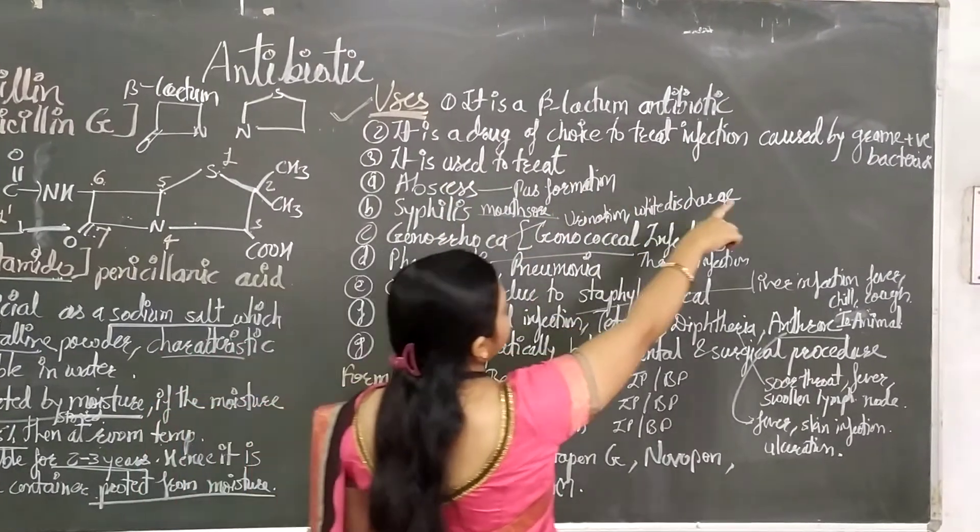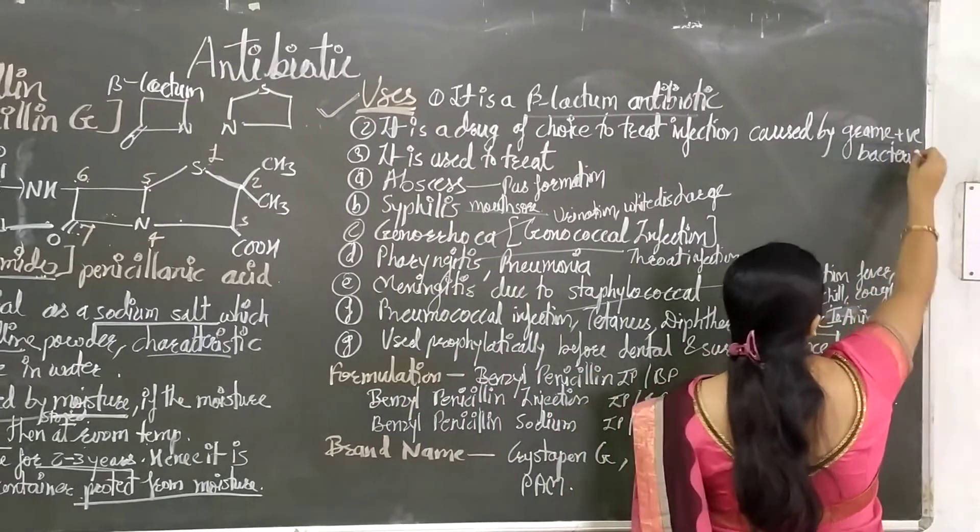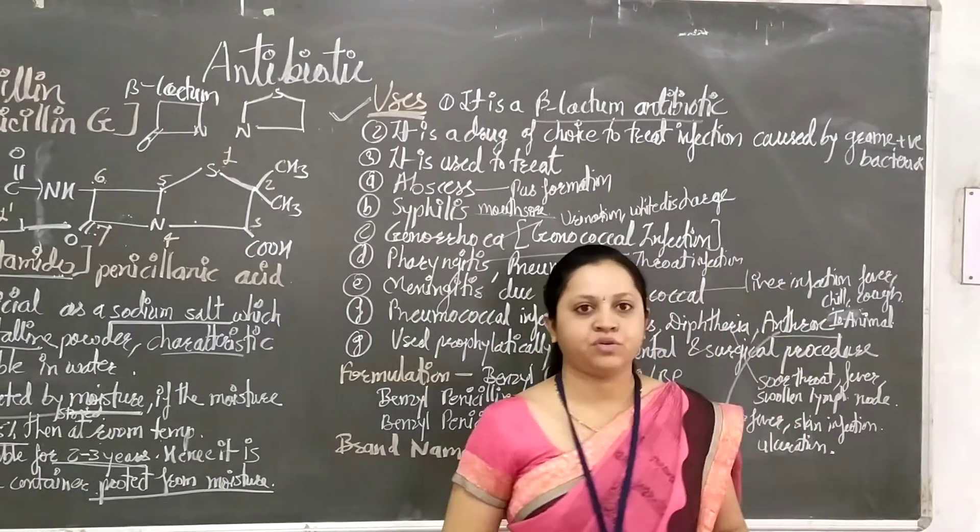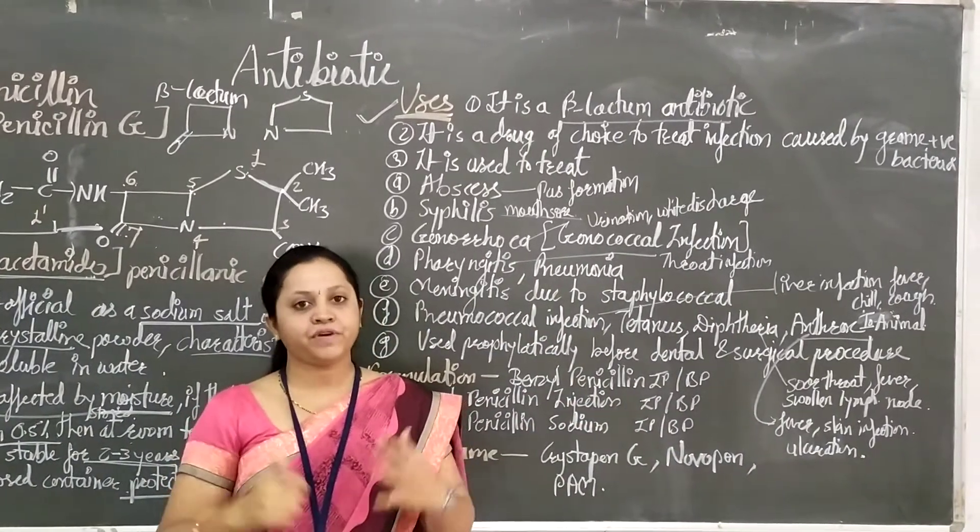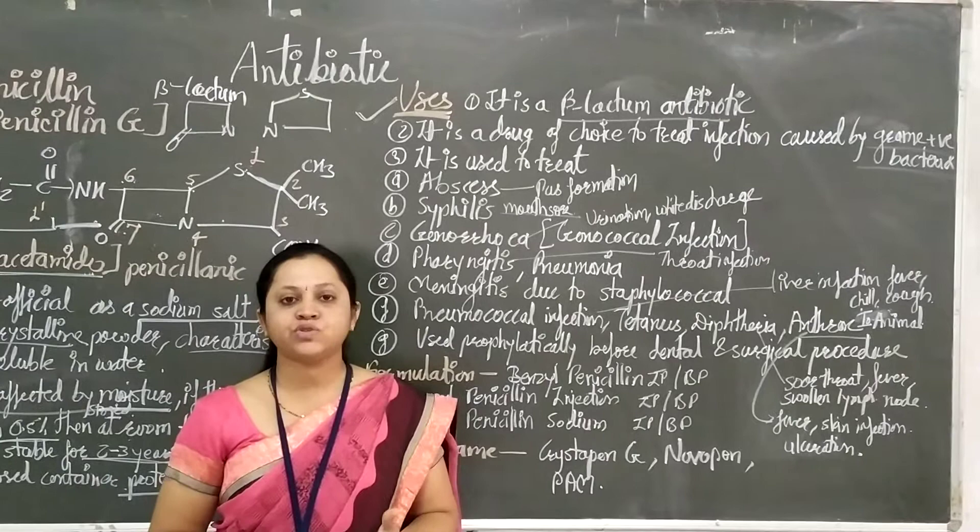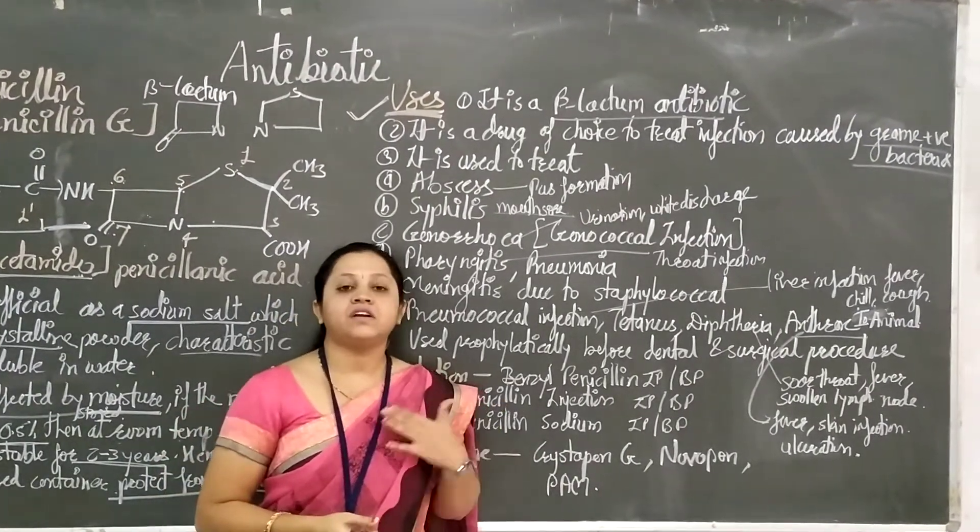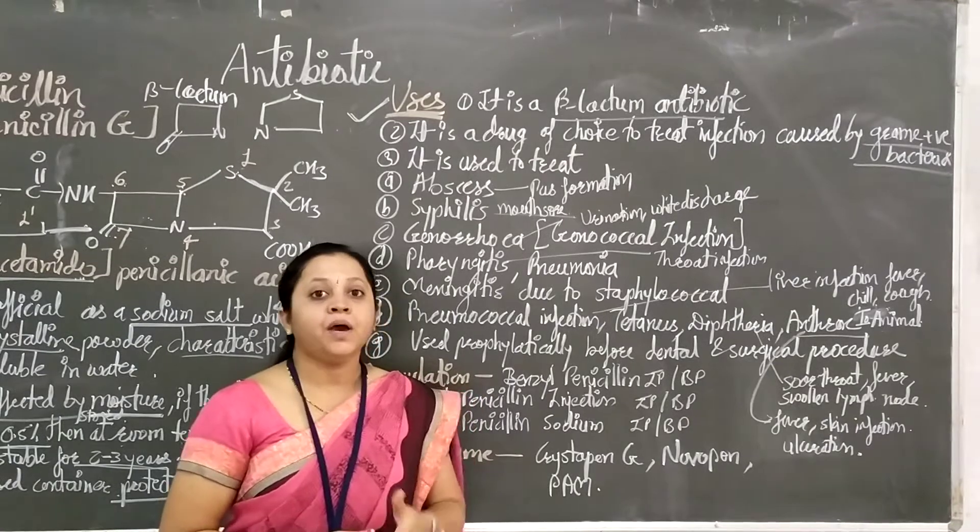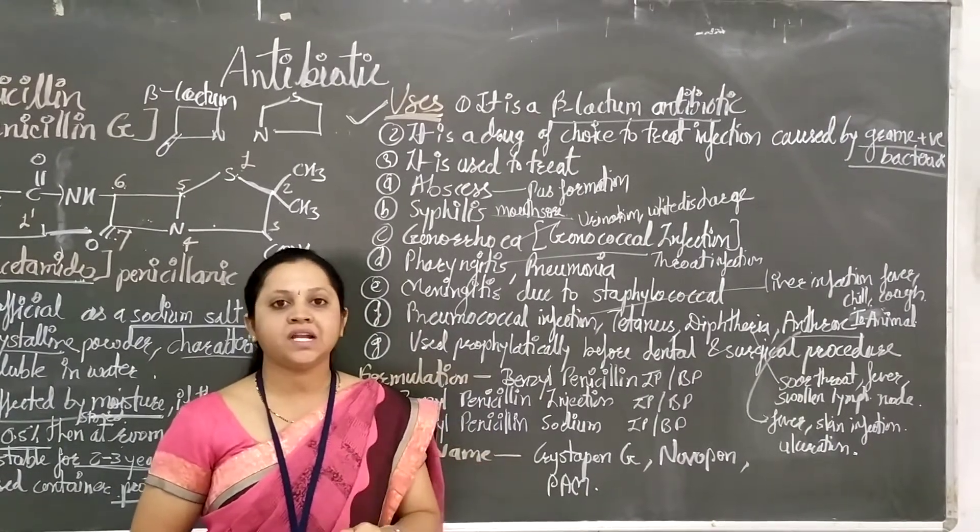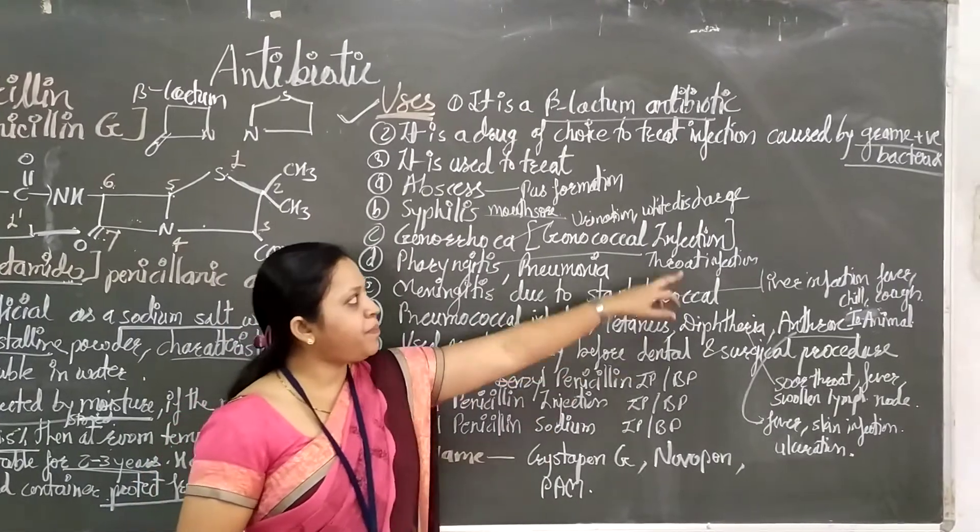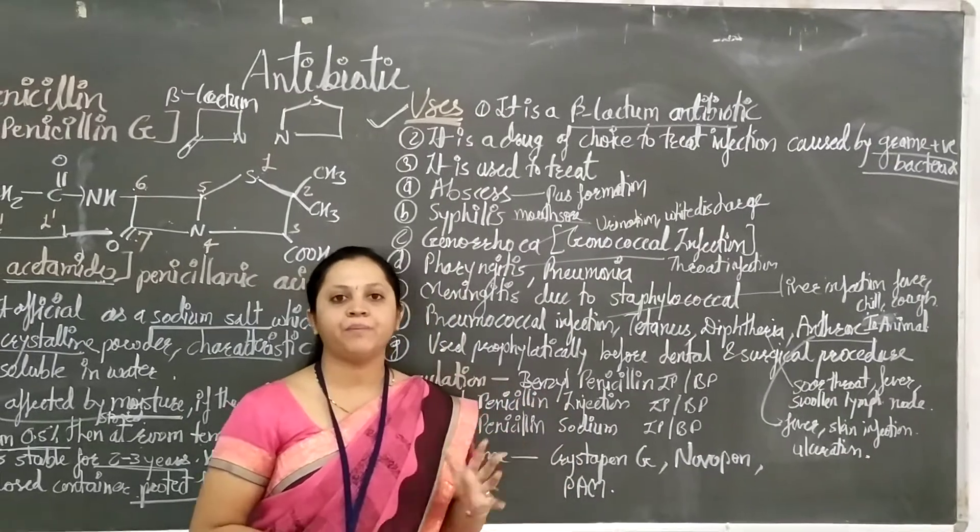Second, it is the drug of choice to treat infections caused by gram-positive bacteria. You need to know why antibiotics are necessary. Antibiotics are necessary when we have infections. We can treat symptoms with analgesics or respiratory medications, but the actual causative agents are the microorganisms. Antibiotics kill the microorganisms. This works primarily on gram-positive bacteria.